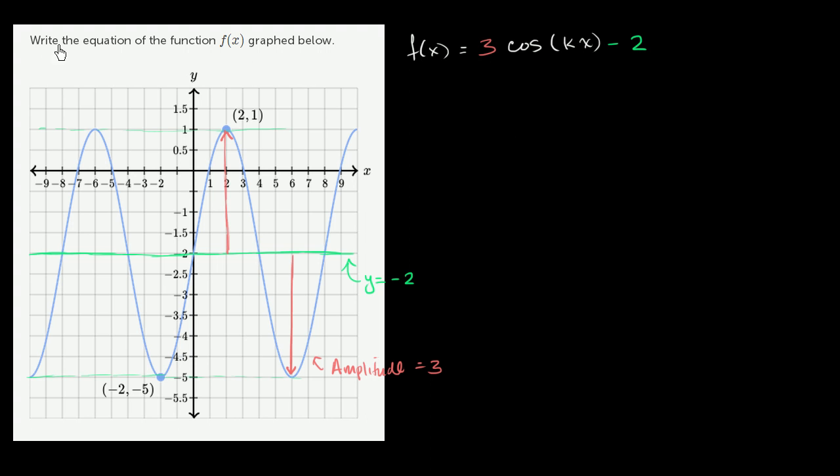So it could take that form, or it could take f(x) is equal to 3 times, it could be sine of x. Or sine of some coefficient times x. Sine of kx minus 2 plus the midline, so minus 2.